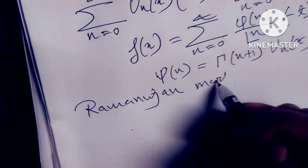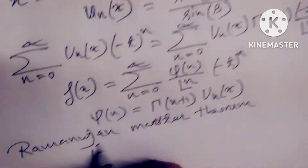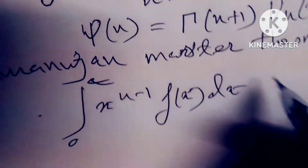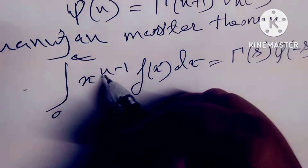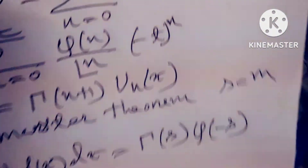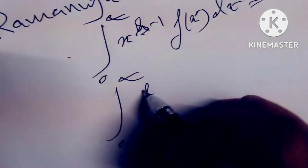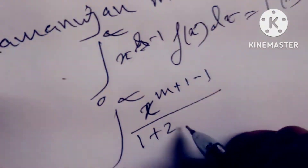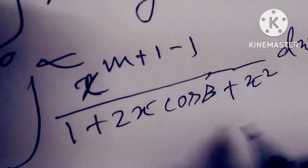Now I apply Ramanujan's Master Theorem. The theorem states: integral from 0 to infinity of x^(s-1) · f(x) dx = Γ(s) · φ(-s). Here s = m, so we get the integral from 0 to infinity of x^(m-1) / (1 + 2x cos β + x²) dx equals Γ(n+1) · φ(-m).